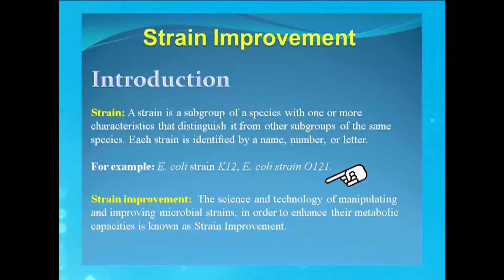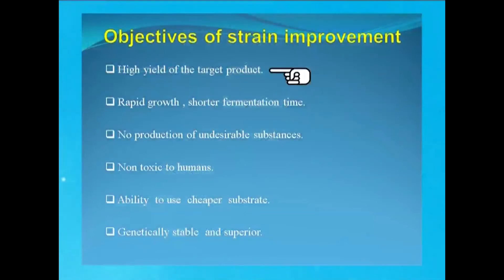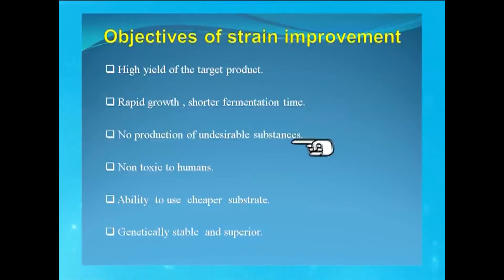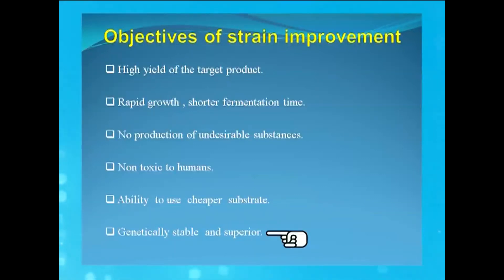The term strain improvement means the science and technology of manipulating and improving microbial strains in order to enhance their metabolic capacities. The objectives of strain improvement are: to obtain a high yield of the target product, rapid growth and shorter fermentation time of the microbe, no production of undesirable substances, the microbe should be non-toxic to humans, and it should be able to use cheaper substrates, with genetic stability and superiority.